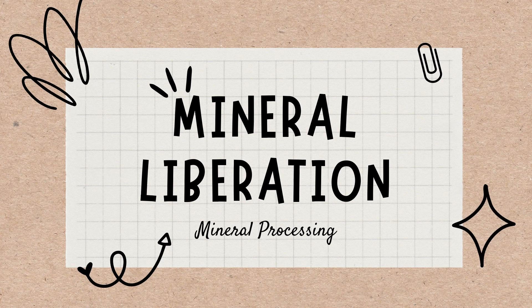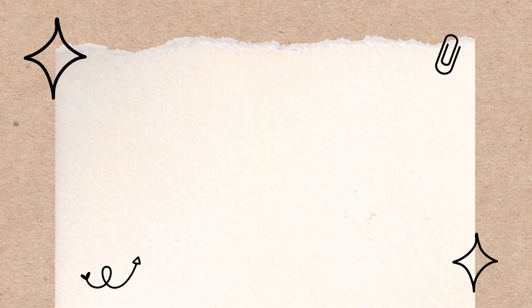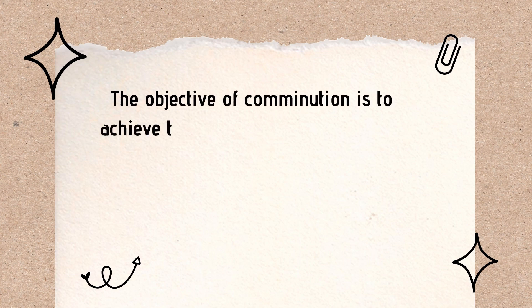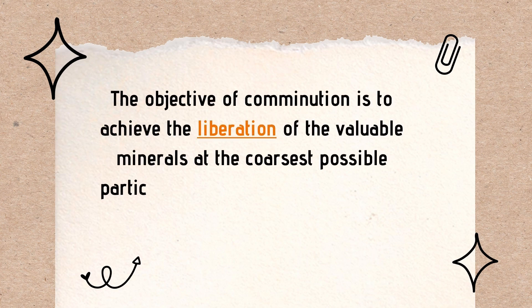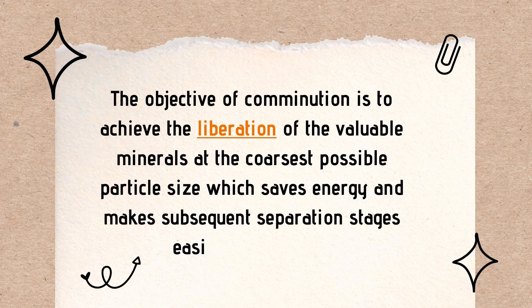In mineral processing, comminution or size reduction is the process of separating valuable minerals from the gangue. The objective of comminution is to achieve the liberation of the valuable minerals at the coarsest possible particle size, which saves energy and makes subsequent separation stages easier and cheaper.